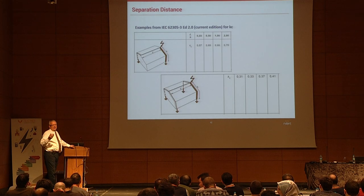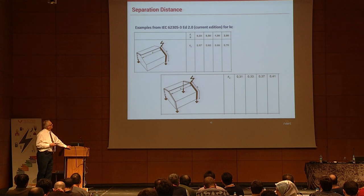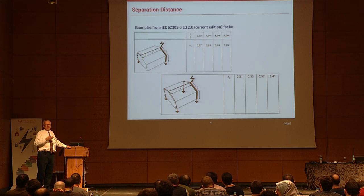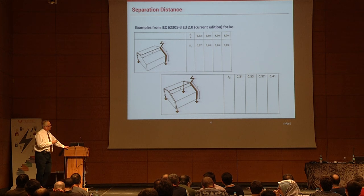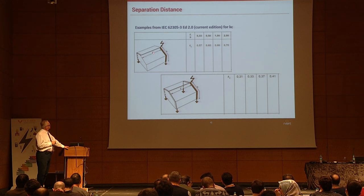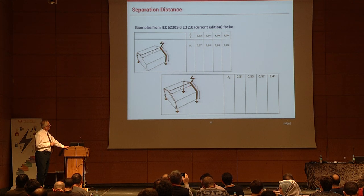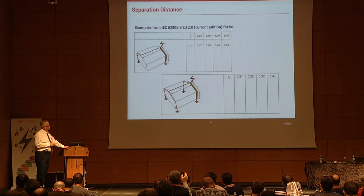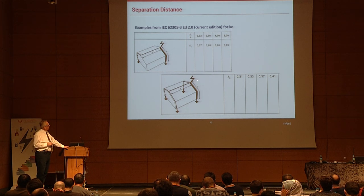The standard gives different scenarios directly as examples. With two down conductors versus four down conductors, the Kc value changes, and it also matters where the lightning strikes. The scenario can become more complex as you increase the number of down conductors.